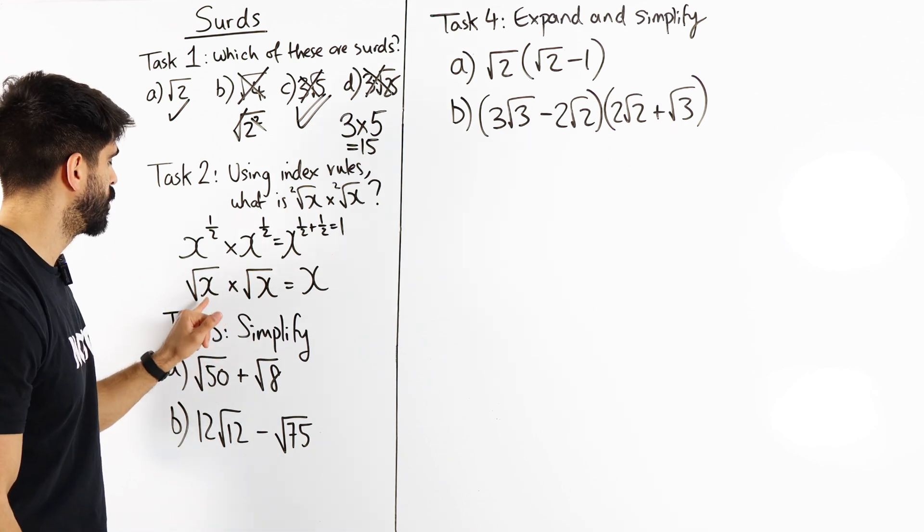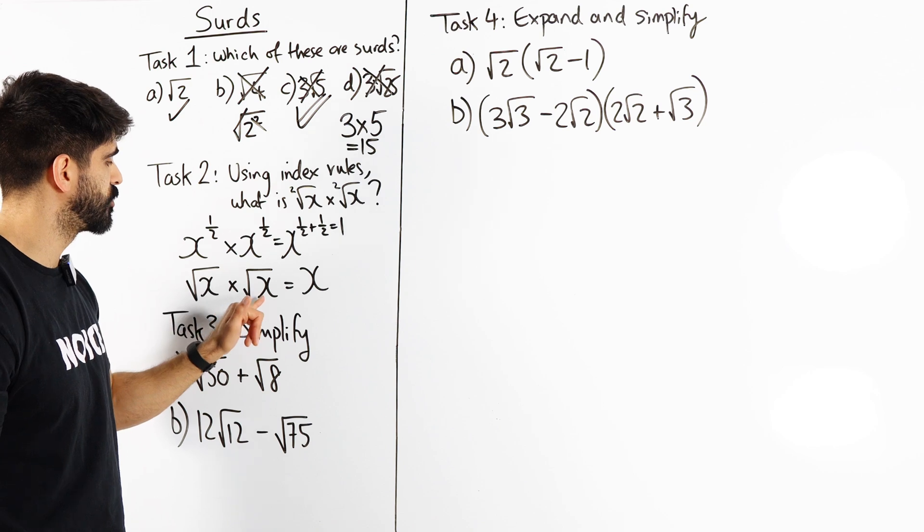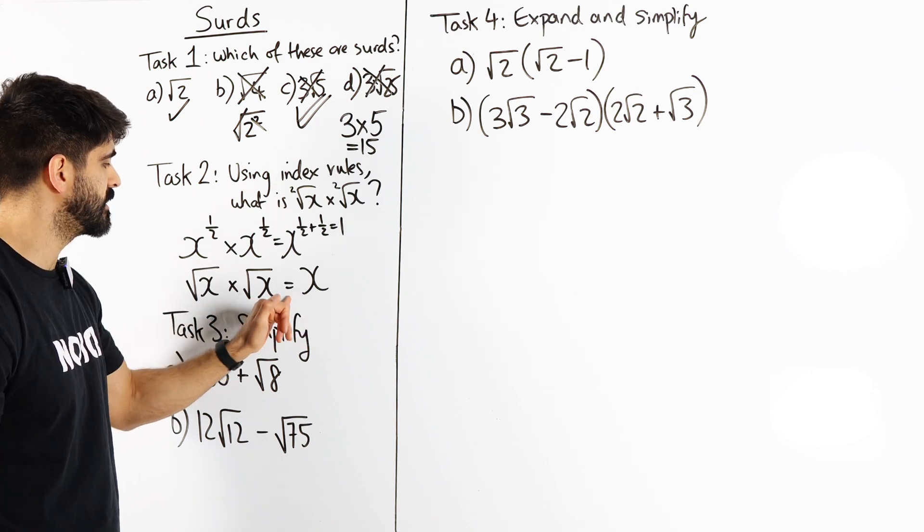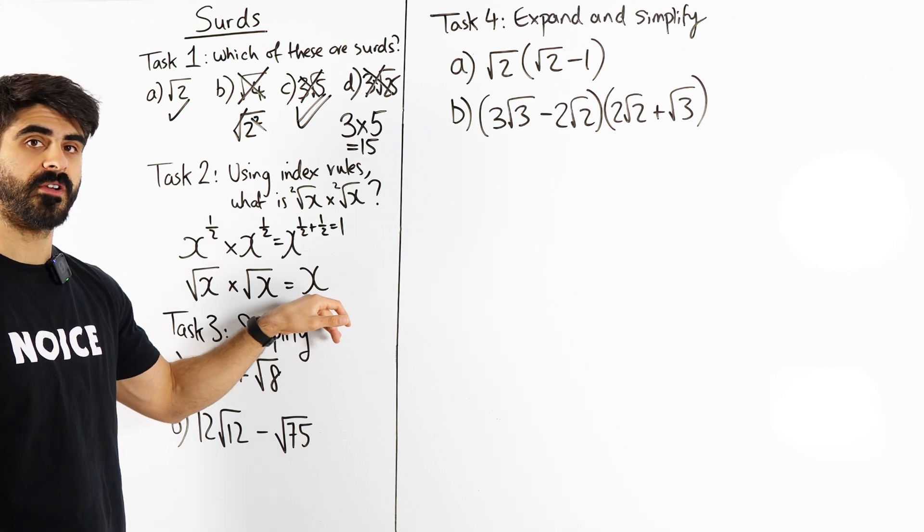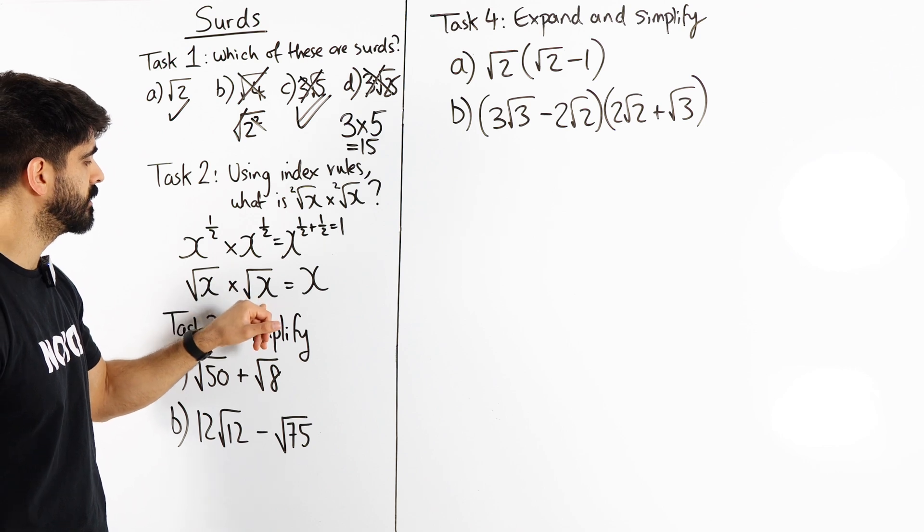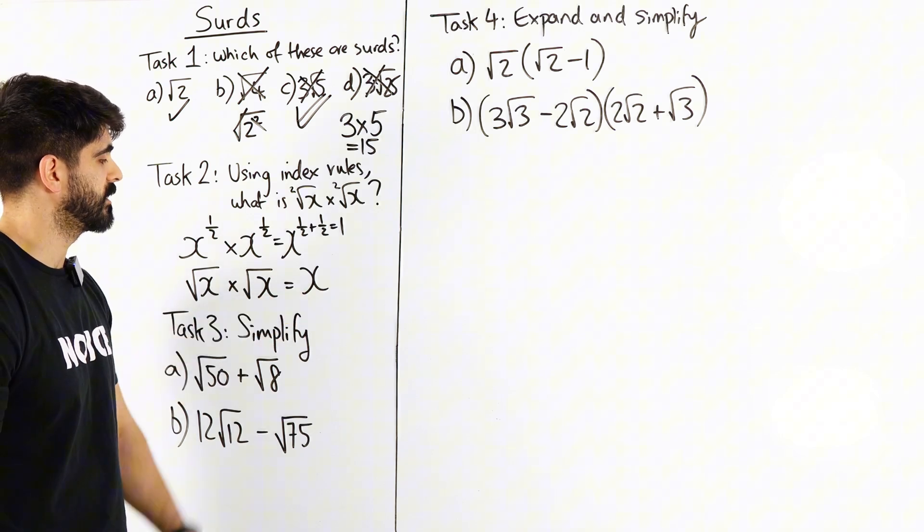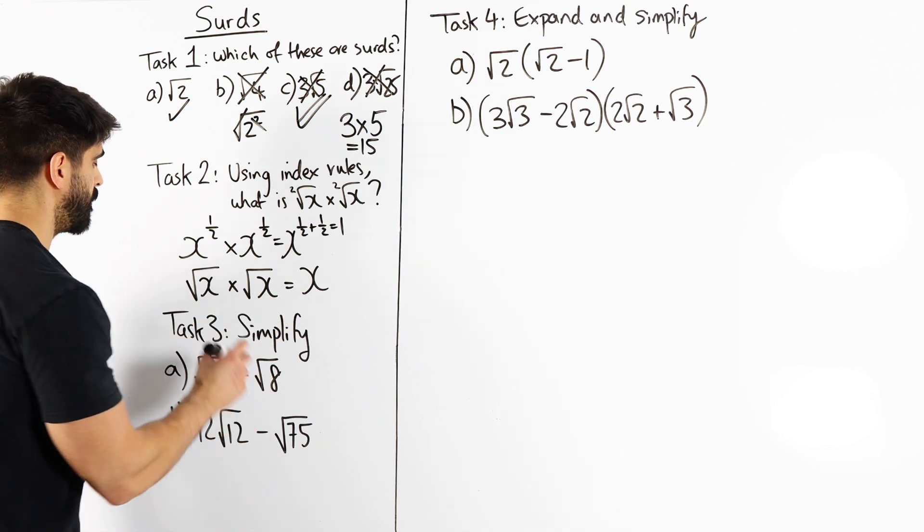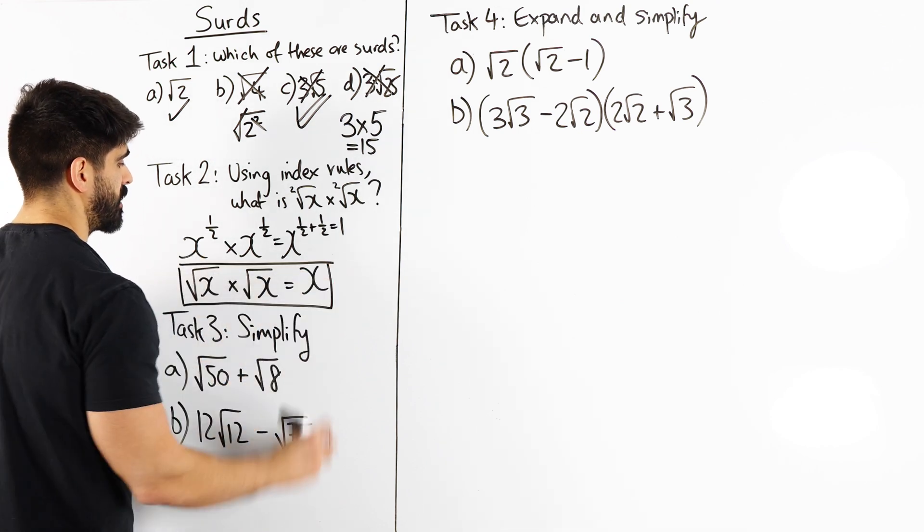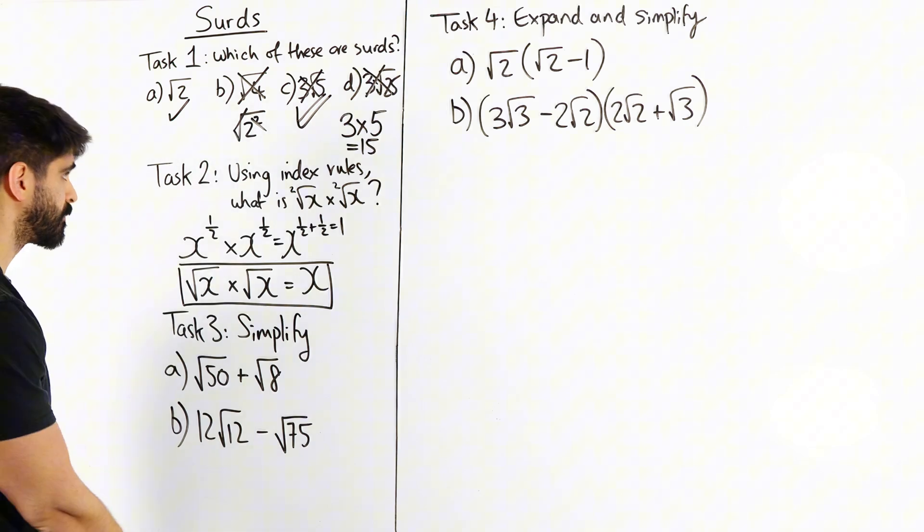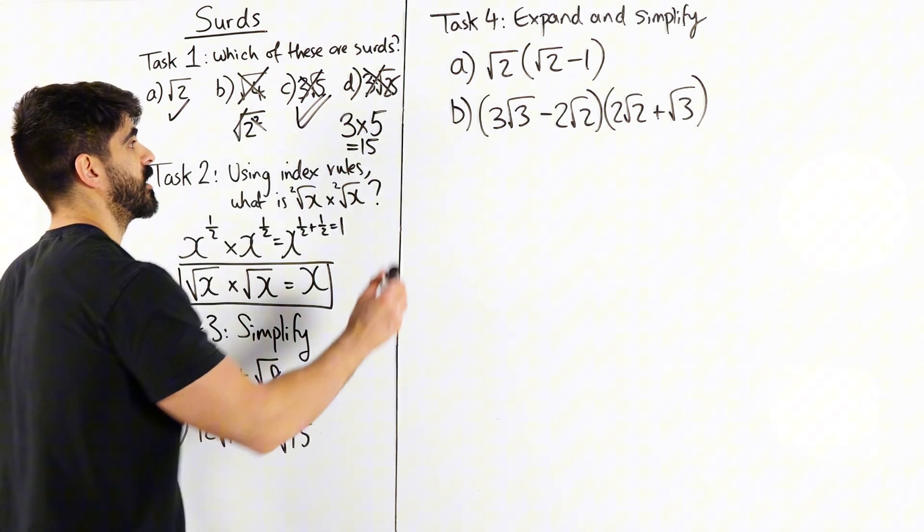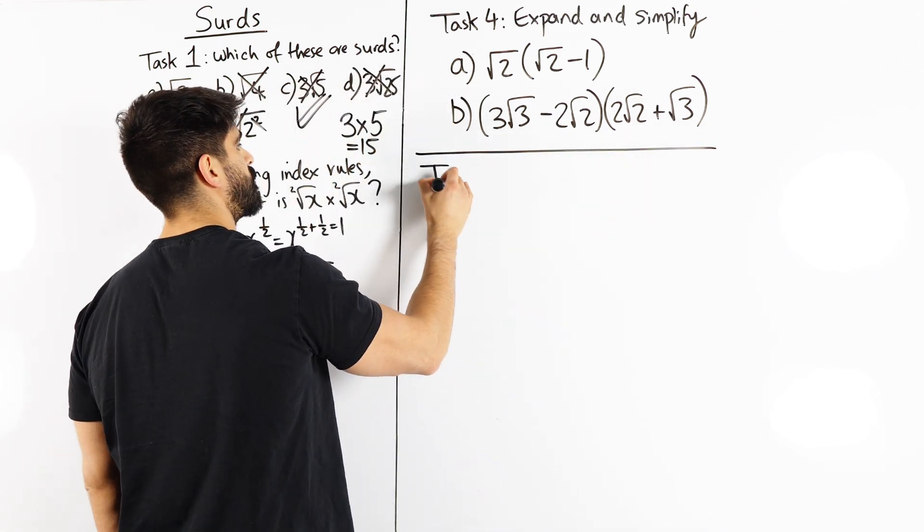So for example, root 2 times root 2 is 2. Root 3 times root 3 is 3. I could go on forever like this. Root 99 times root 99 is 99. Very important concept in surds and it's one that we use when we rationalize denominators as well. Okay task 3, we want to simplify these surds. I'm going to do that over here. I'll call it T3.